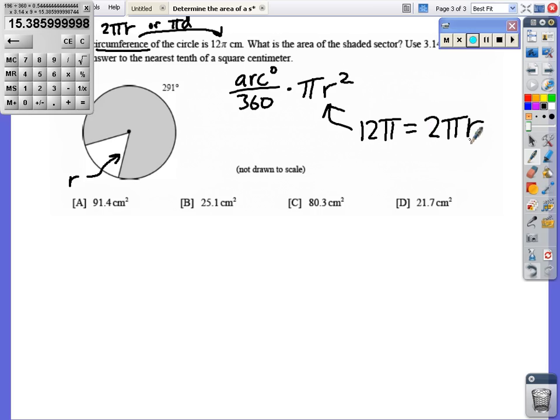Now I'm going to solve it for r. I need to get this 2π off of here, so I'm just going to divide both sides by 2π. 2π divided by 2π is 1, so those effectively cancel each other out. We're left with r equals 12π divided by 2π. The π's cancel each other out, and then 12 divided by 2 is 6. So the radius is 6. That's not the answer, but that gets us what we need to plug into our formula.